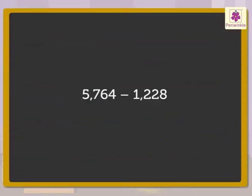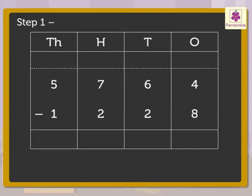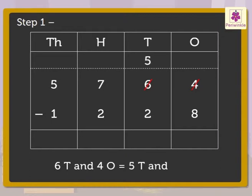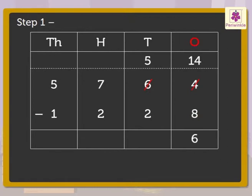Now, let us look at the process of subtraction of these numbers directly. Step 1: Subtract the digits in the ones column. As the ones are not enough, we regroup the tens. That is, six tens and four ones is equal to five tens and fourteen ones. Therefore, fourteen minus eight is equal to six ones. Step 2: Subtract the tens. That is, five minus two is equal to three.